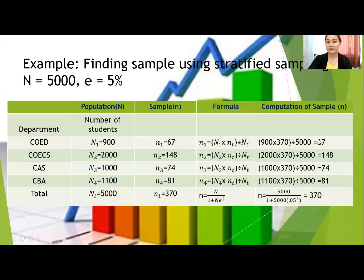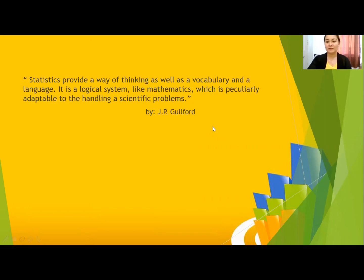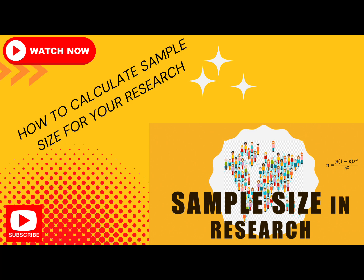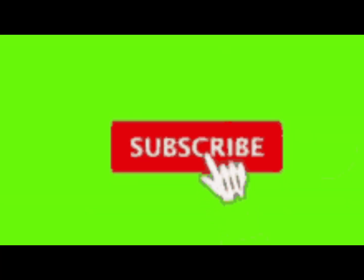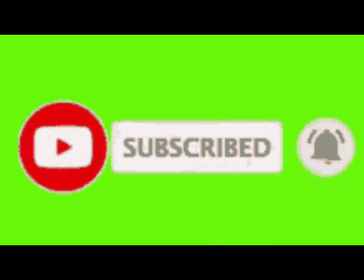So the sample for each department is: College of Education 67, College of Engineering and Computer Studies 148, College of Arts and Sciences 74, and CBA 81. You round off to whole numbers since students are discrete — you cannot subdivide. The total sample is 370, distributed across the four departments. This is how you solve using stratified sampling. If you have any questions, leave them in the comments and don't forget to subscribe for more videos on research.